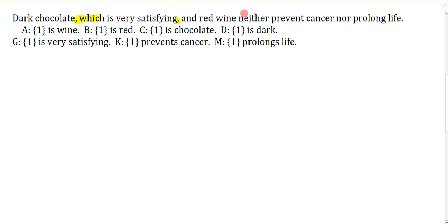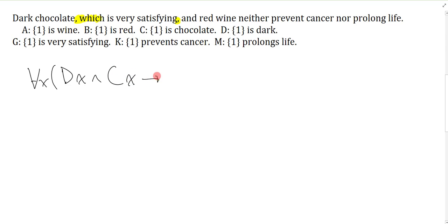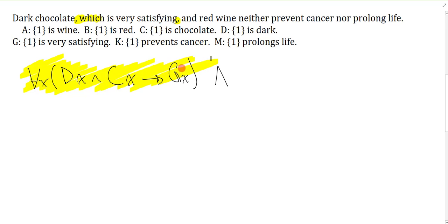Dark chocolate, which is very satisfying — so I'm just going to symbolize this yellow non-restrictive clause. I want to say: dark chocolate is very satisfying. The group is dark chocolate and the property is very satisfying. Am I saying this about all dark chocolate or some? It's typically pretty obvious I'm talking about all. So I'll say: for anything, if you're dark and you are chocolate, then you are very satisfying. A non-restrictive clause is separated from the rest of the sentence via a conjunction — that's actually the main connective of the entire sentence.